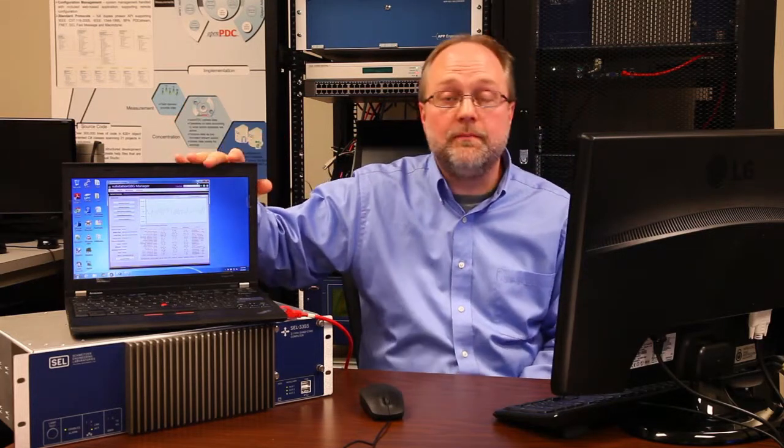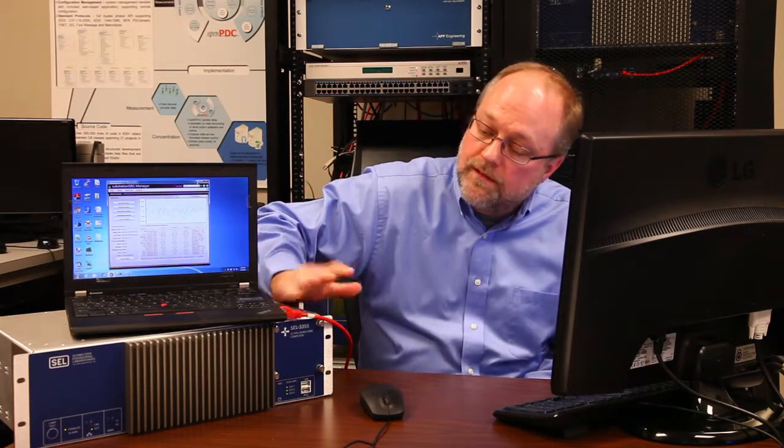Okay. To my right, on top of the blue computer here, I have a laptop that's running the substation SBG. Again, just local software connected to a couple of PMUs locally, streaming data, coming back to an Open PDC. So below it is our SEL 3355 that's running an Open PDC version 2.1, and also running the Open Historian 2.0 as its primary archive. So I'm going to transition back to the computer and show you some of this activity.